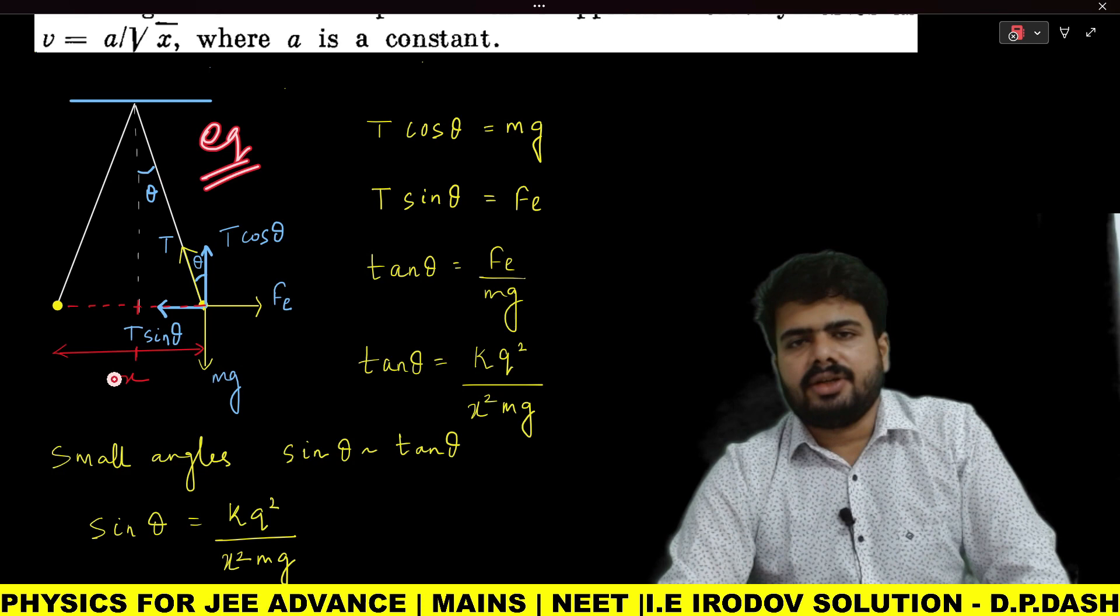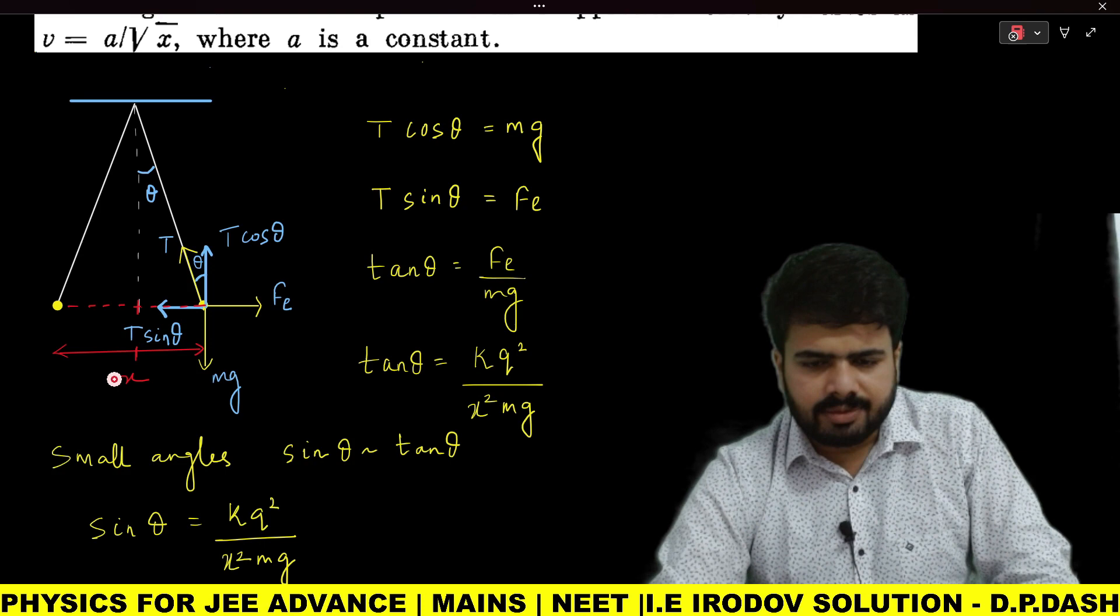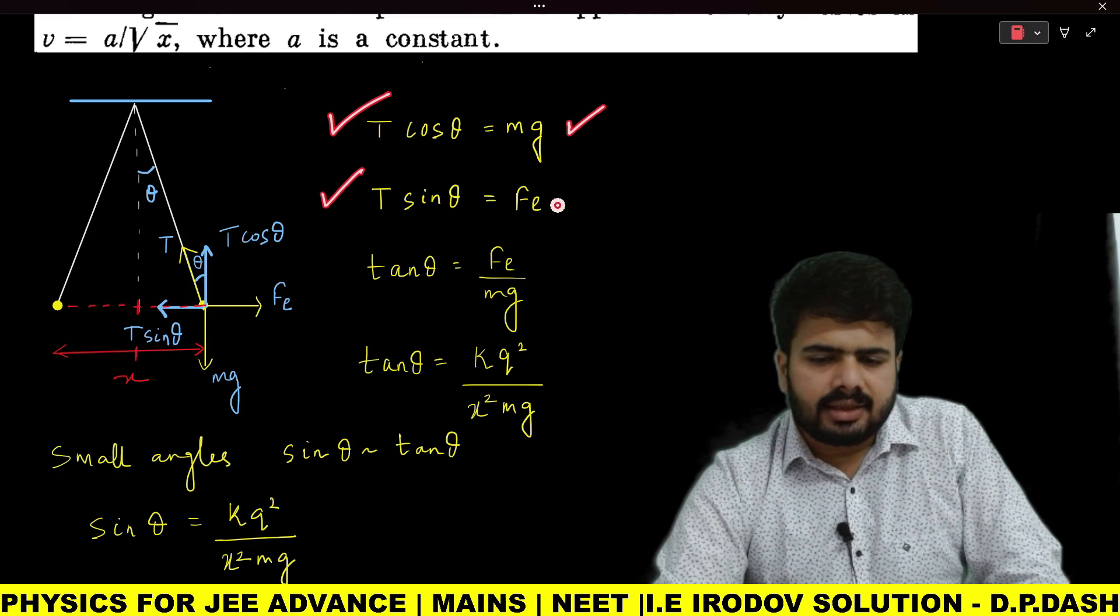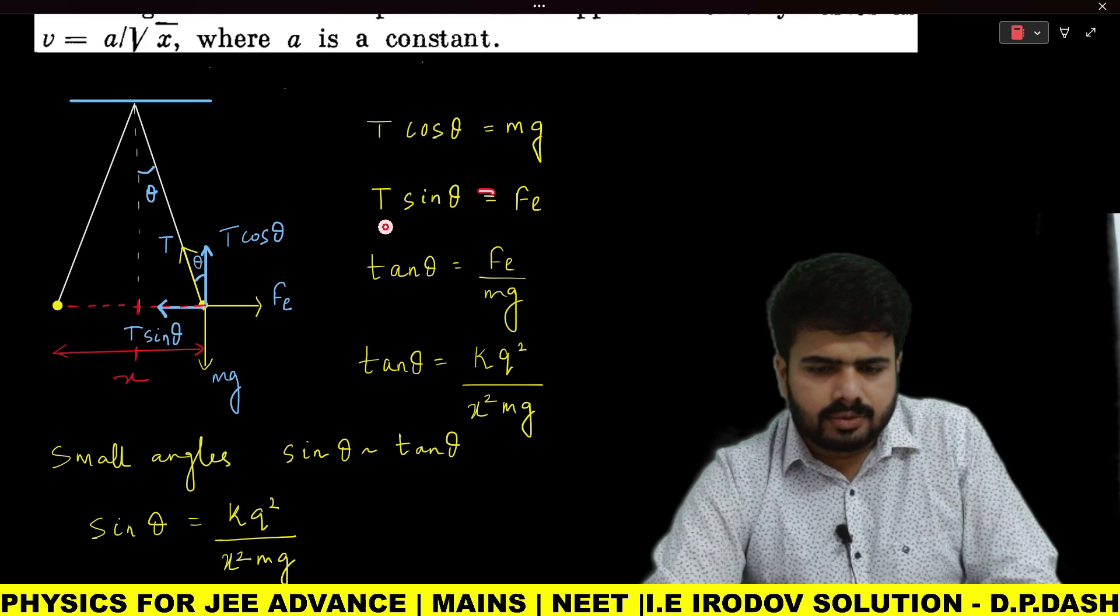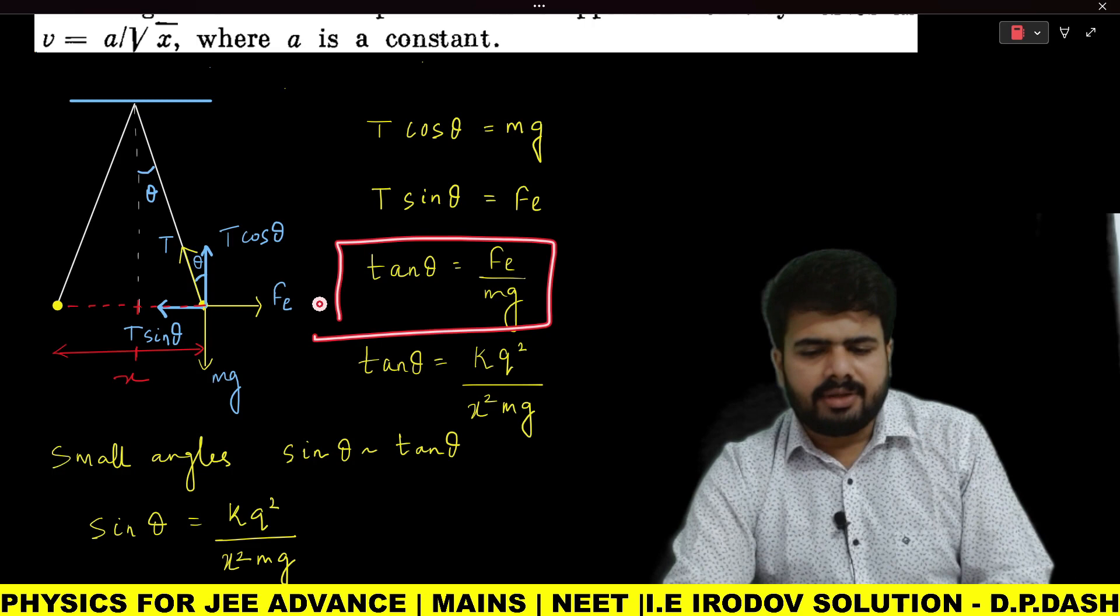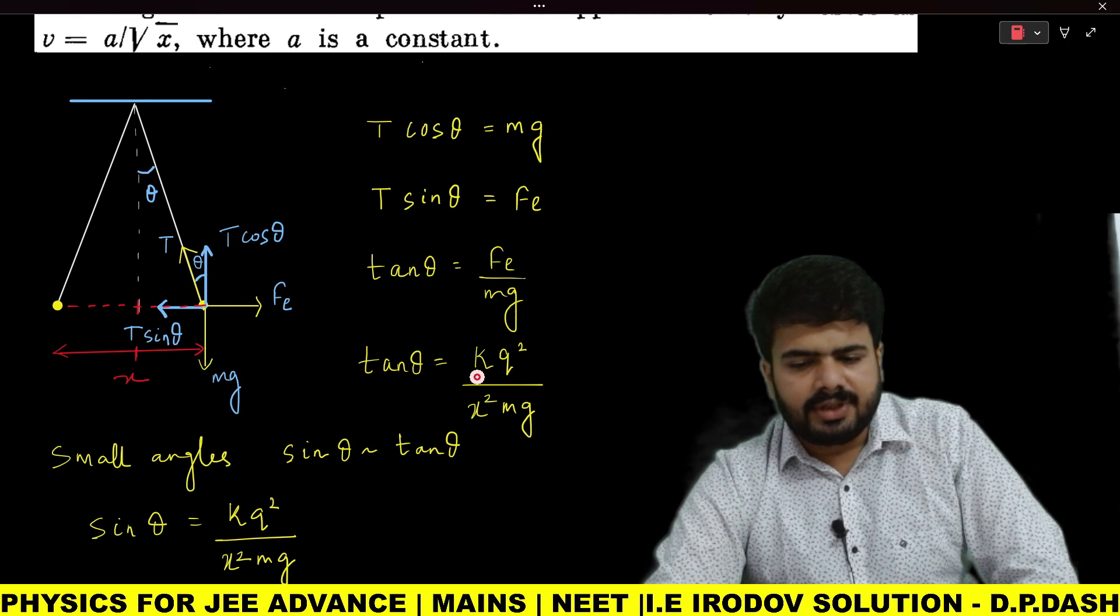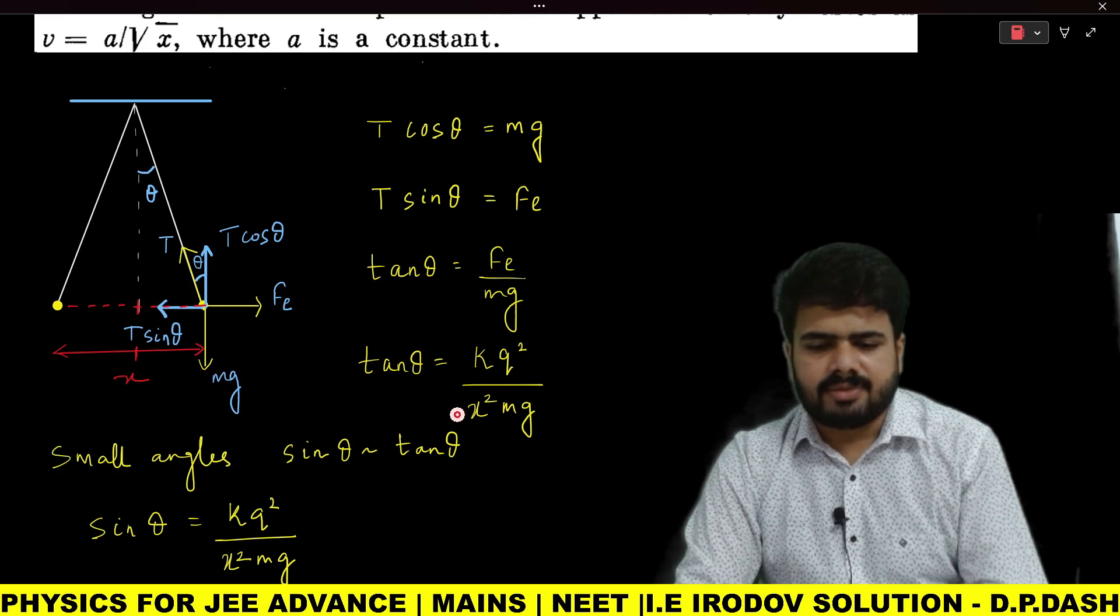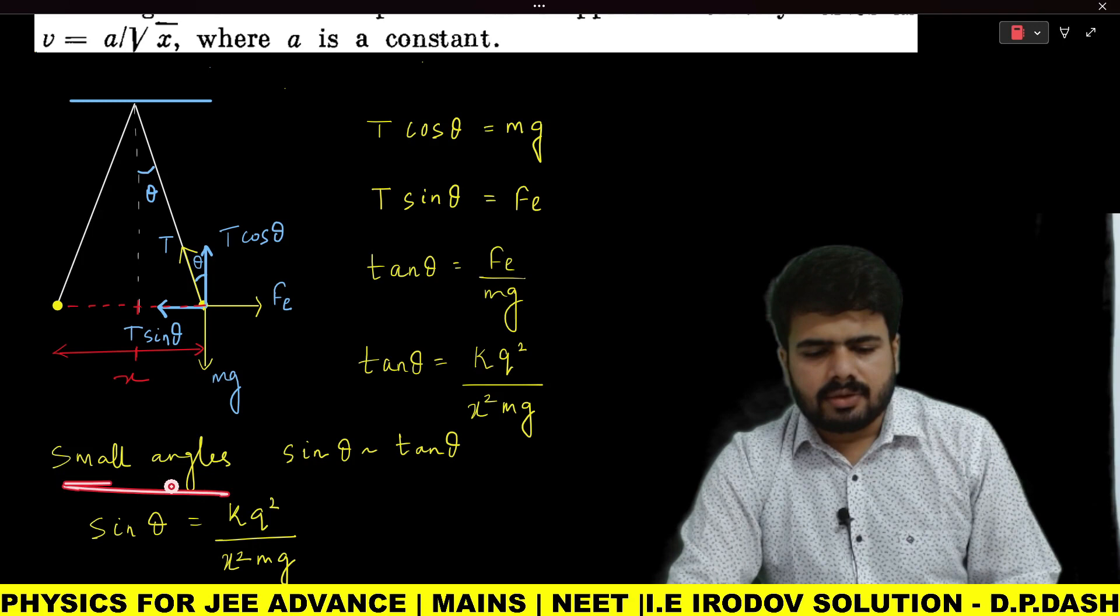In equilibrium condition, all forces should be balanced. I am balancing T cos θ with mg and T sin θ with electrostatic force Fe. Dividing equation 2 by equation 1, we get tan θ = Fe/mg. This result is very important. In place of Fe, I can write kq²/x², and mg remains as it is.